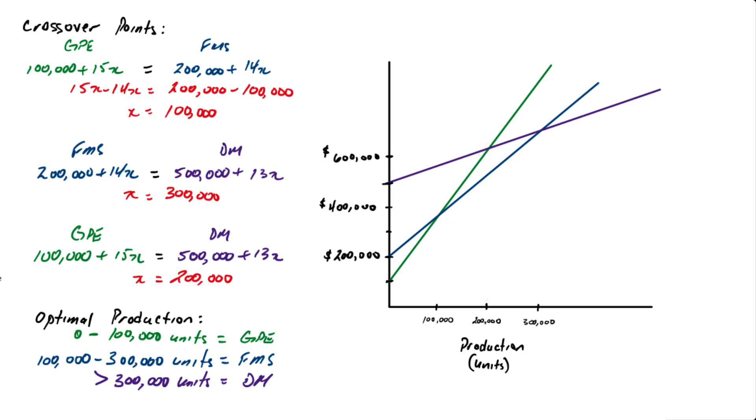And then we can use the crossover points to help us determine where the optimal production levels are. So from 0 to 100,000 units we can see that GPE is the most cost-effective option. And then at that crossover point it shifts to FMS between 100,000 and 300,000 units. And then anything after 300,000 units, DM or the dedicated machine is the most cost-effective process.